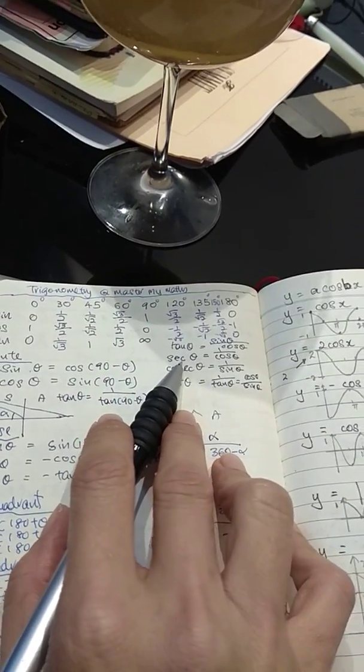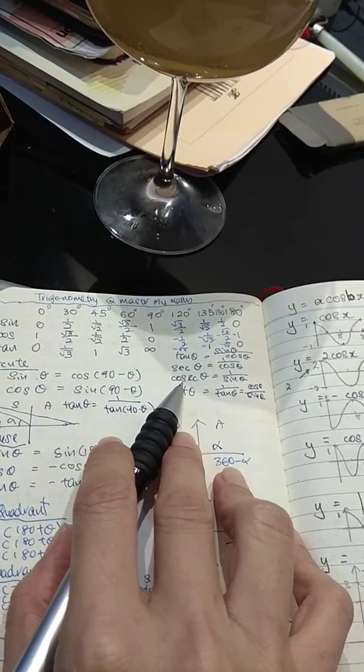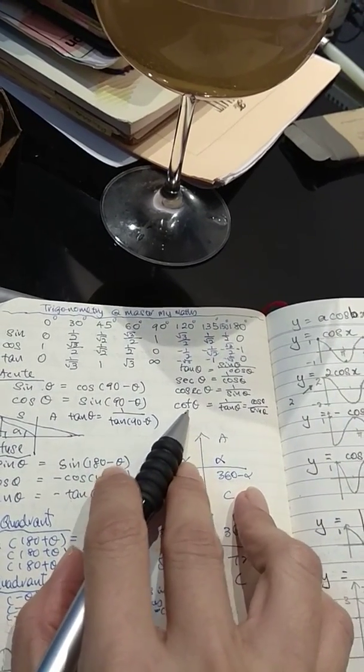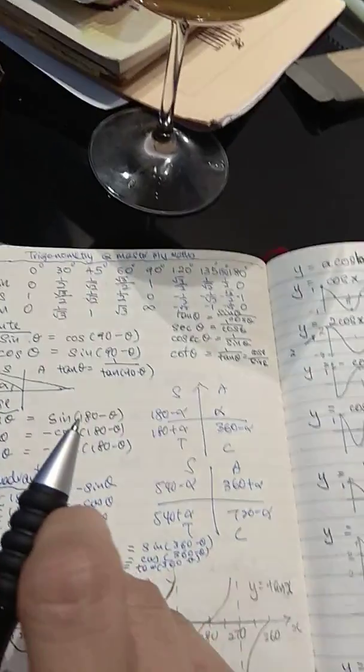Now how do you remember all this? See the third letter. Cosecant is third letter c, that's why it's sine. Cotangent t, so it's 1 over tangent.